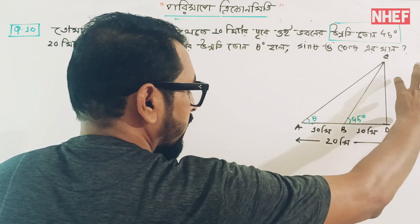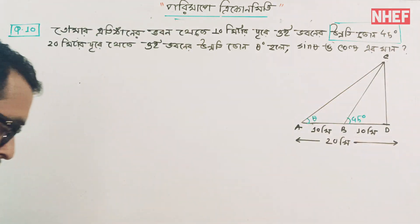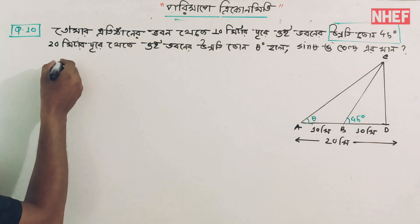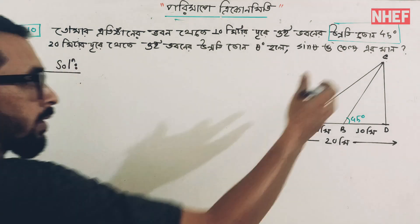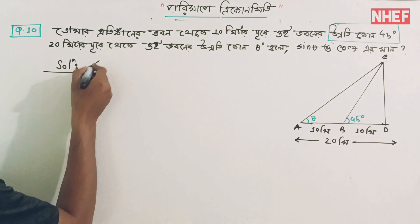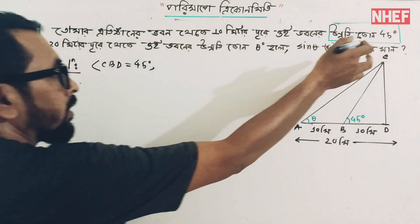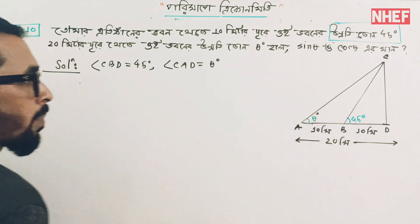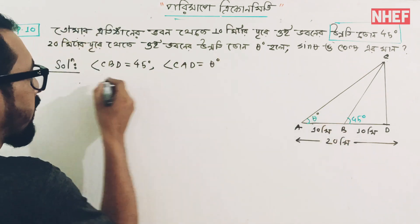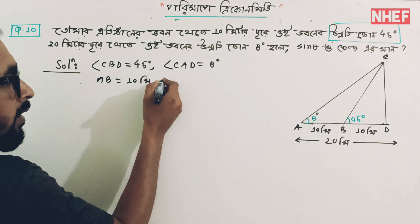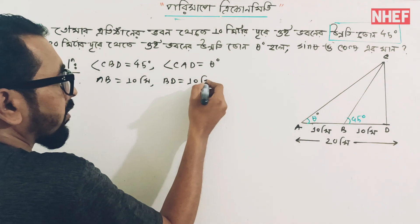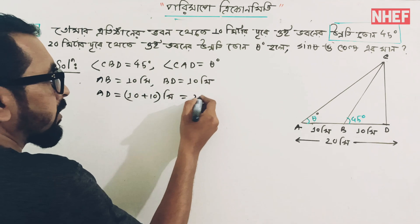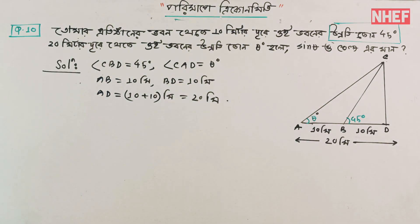16 meters. We will use the lumbar and the CDR to get rid of the CDR. Alright, let's start with the solution. The information: CBD is equal to 45 degrees, CAD is equal to 0 degrees. AD is equal to 10 plus 10 meters, that is 20 meters. AD is equal to 20 meters.